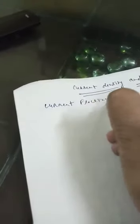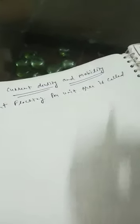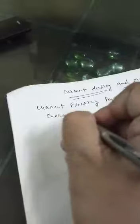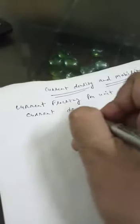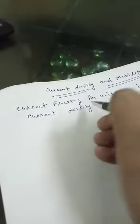Current density and mobility. Current flowing per unit area is called current density.